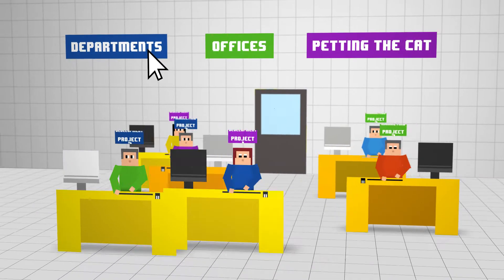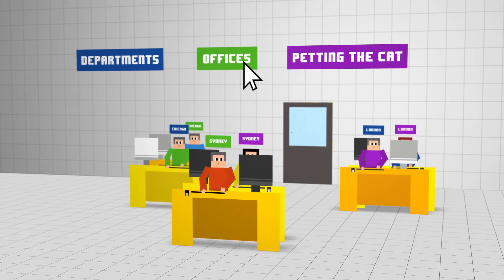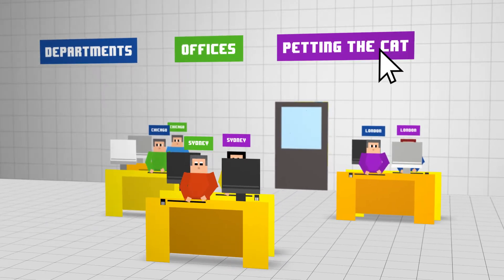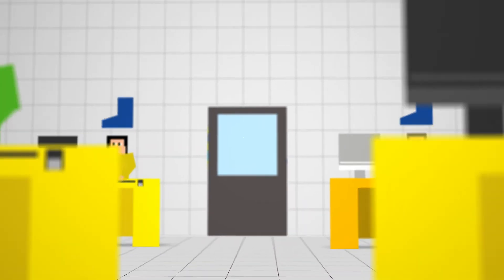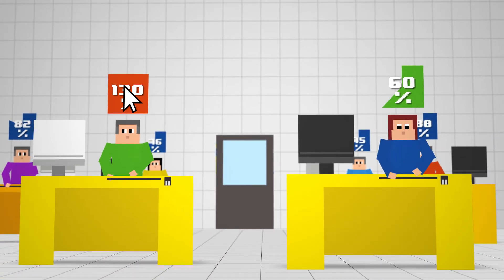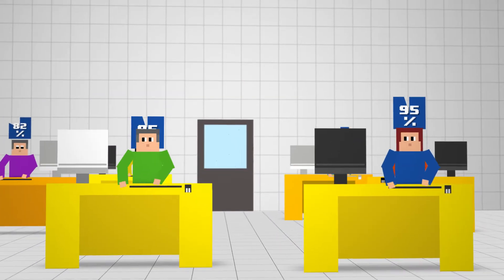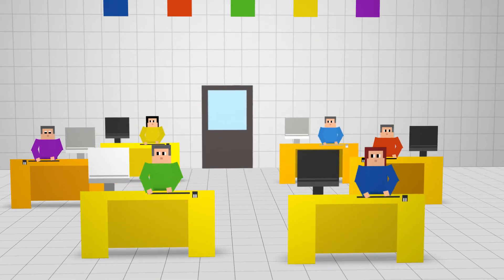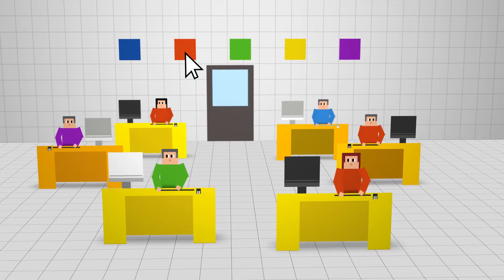You can group your resources by departments, offices, or any other characteristic. As well as viewing the utilization of a group, you can manage each resource's utilization separately to control the workload. You can design your own custom color schemes to tell apart different types of tasks, their statuses, or projects.